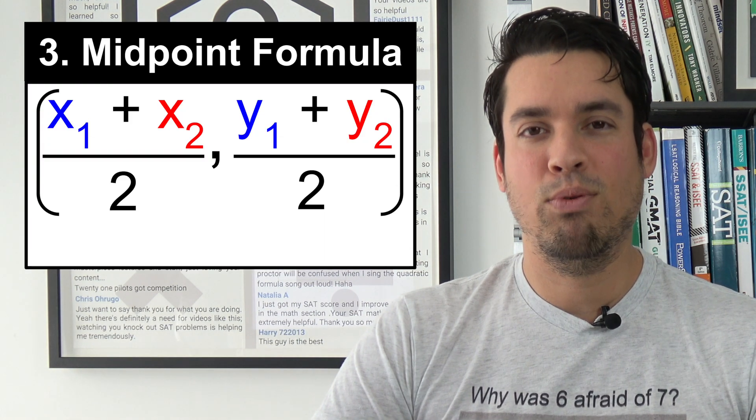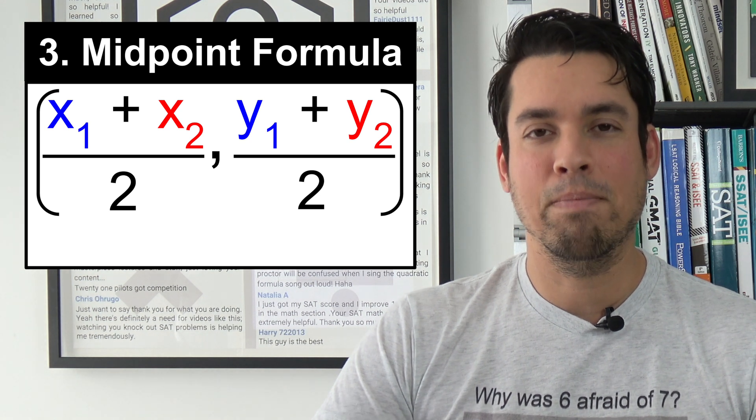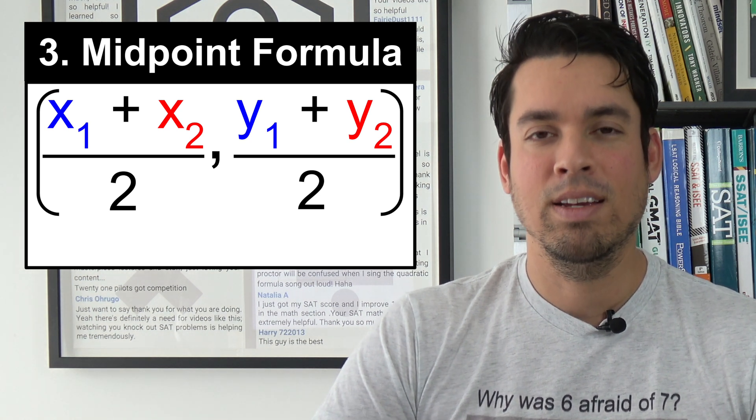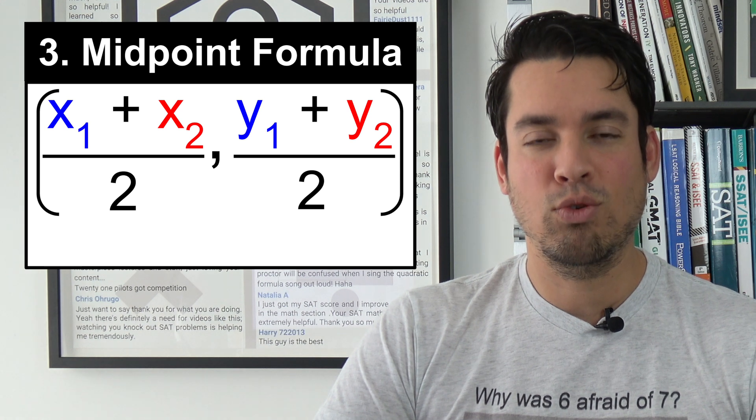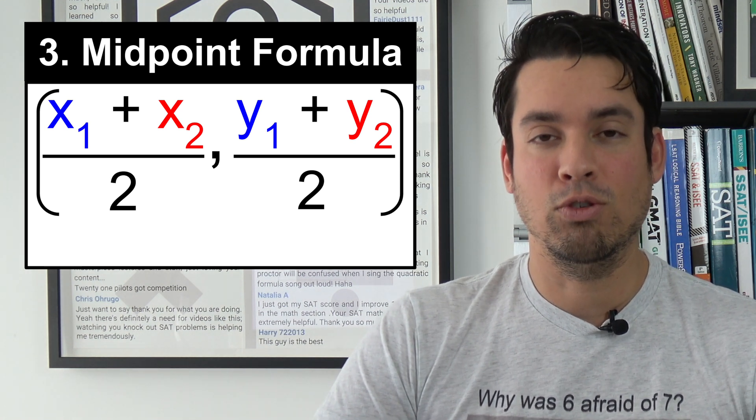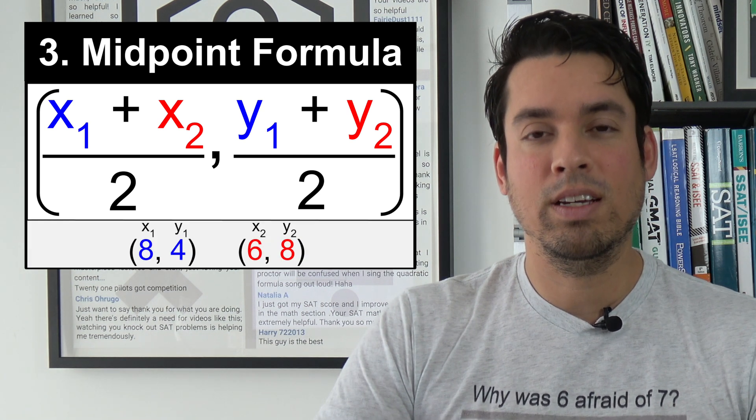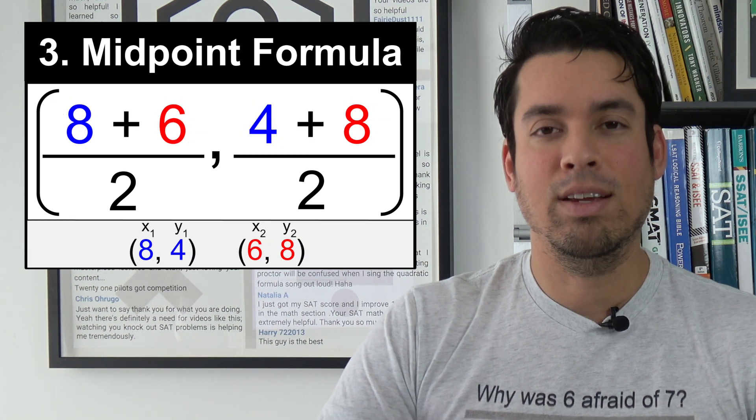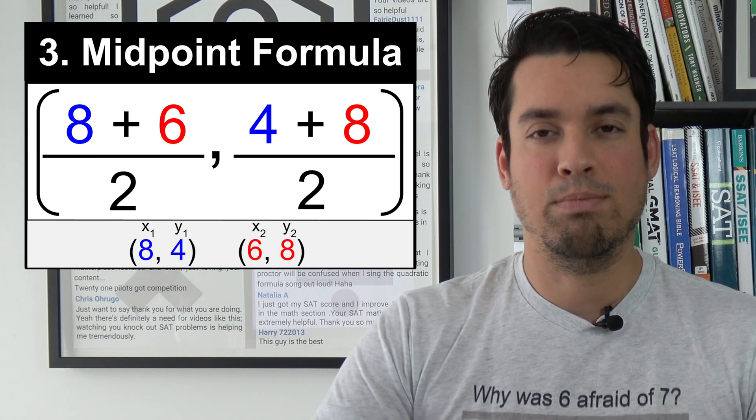Next on the list is the midpoint formula. This tells you how to calculate the midpoint of a line segment, and it's simply x₁ plus x₂ divided by 2, comma y₁ plus y₂ divided by 2. But the best way to think about this formula is you're simply taking the average of the x and y values of the two endpoints.